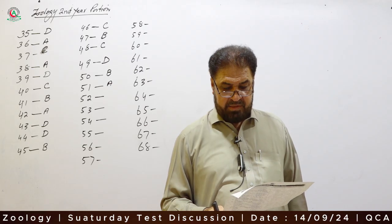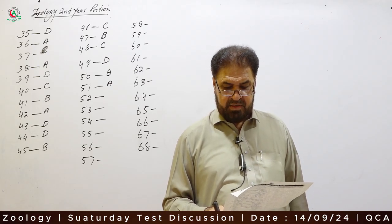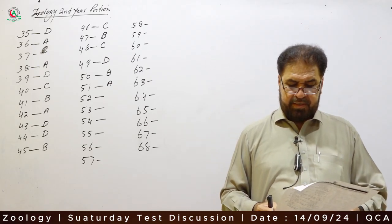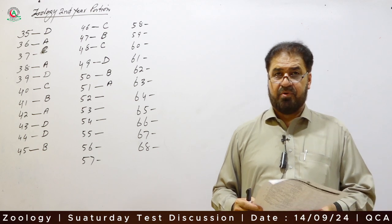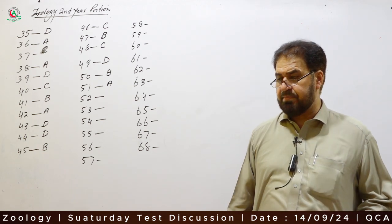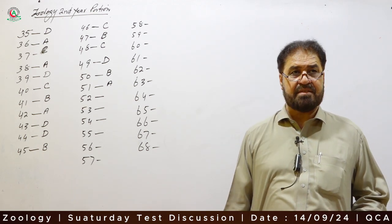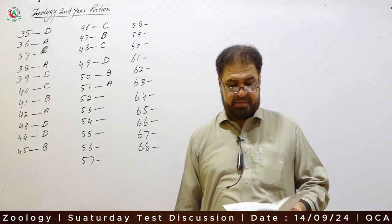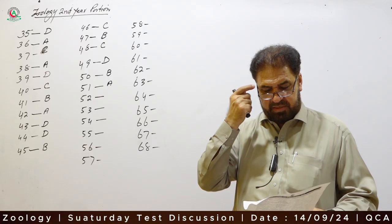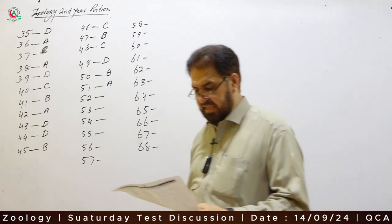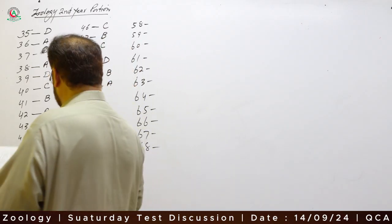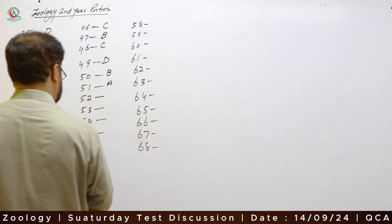Question 52: Olfactory bulbs of the brain are part of — the forebrain has two subdivisions: telencephalon and diencephalon. The olfactory bulbs are located in the telencephalon. Option A is correct.